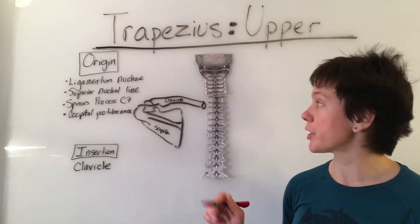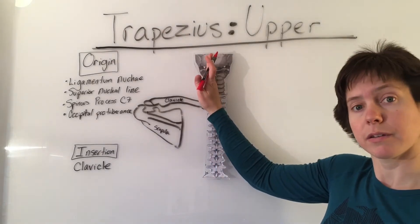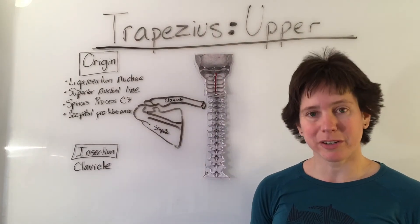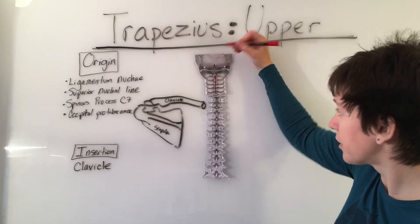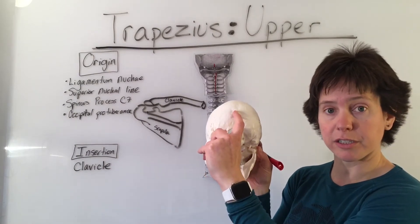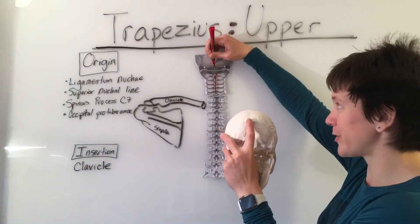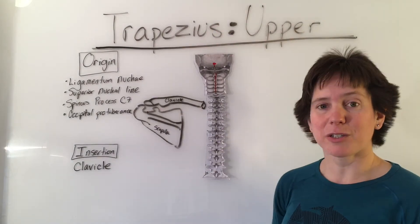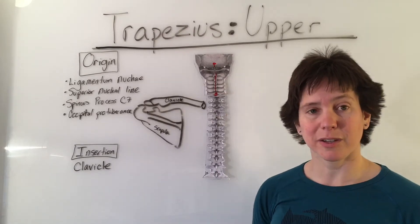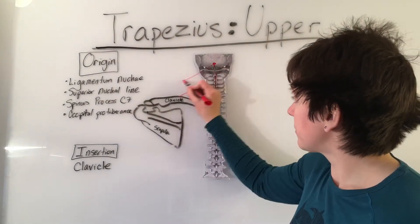The upper trapezius originates on the ligamentum nuchae, which runs along the spinous processes of the cervical vertebrae. It also originates on the superior nuchal line of the skull — specifically near the external occipital protuberance — and on the spinous process of cervical vertebra seven. The upper trapezius travels to insert on the posterior lateral one-third of the clavicle.